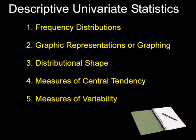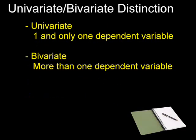But let's look at the definitions first of univariate and bivariate. Since we are talking about univariate statistics today, we'll start out with that. It simply means that there's one and only one dependent variable involved in the study. You can remember from last time, the dependent variable is the one that the researcher is interested in studying.